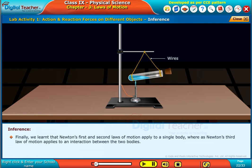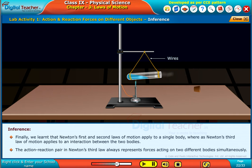Finally, we learned that Newton's first and second laws of motion apply to a single body, whereas Newton's third law of motion applies to an interaction between two bodies. The action-reaction pair in Newton's third law always represents forces acting on two different bodies simultaneously.